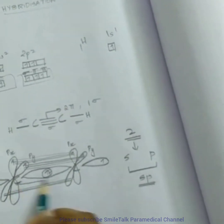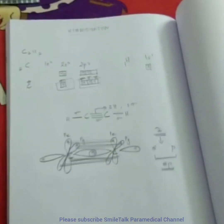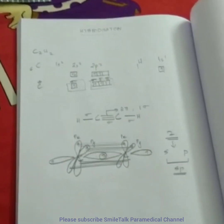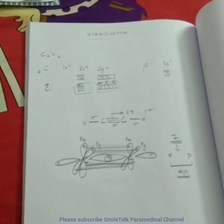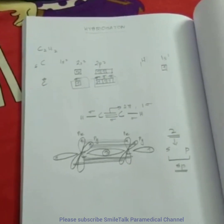Sharing two pairs of electrons. And thus this is the structure of C2H2 hybridized atom. Thank you.